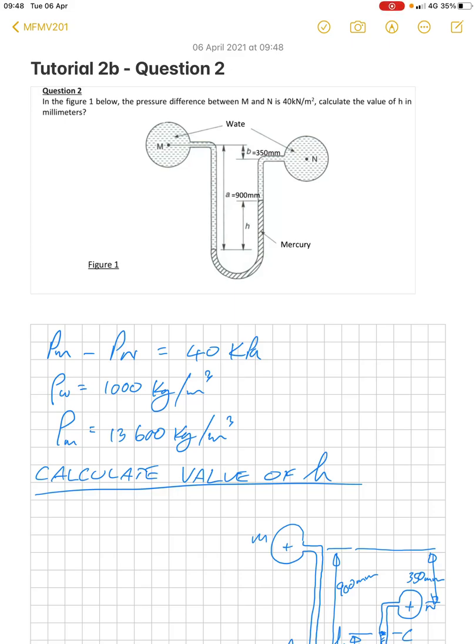This is tutorial 2B question 2. In this question we have two pipes with water flowing in them. In the center of the pipe on the left is point M and in the center of the pipe on the right we've got point N.